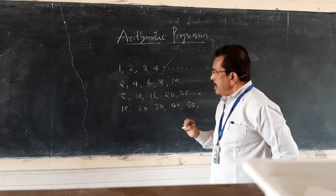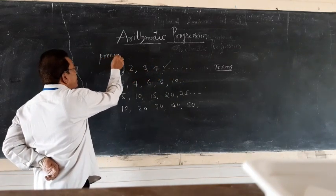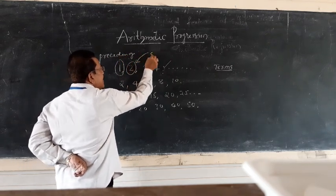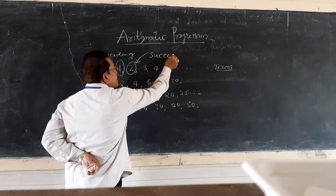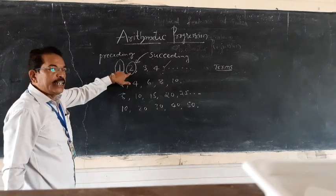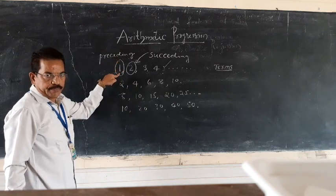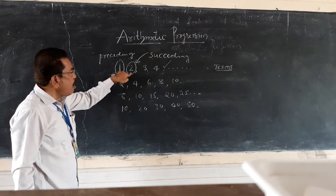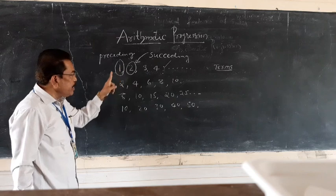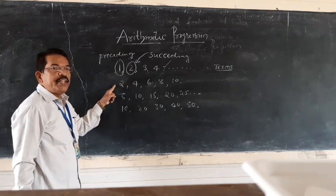In each set of numbers, the first number is called the preceding term and the second number is called the succeeding term. The succeeding term is obtained by adding a fixed number to the preceding term. In the set 1, 2, 3, 4, the succeeding term is obtained by adding 1 to the preceding term. In 2, 4, 6, 8, 10, the succeeding term is obtained by adding 2 to the preceding term.